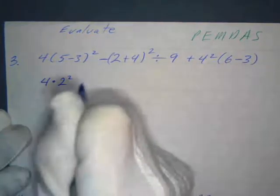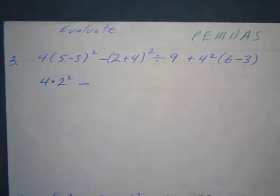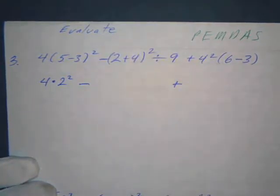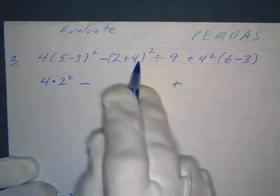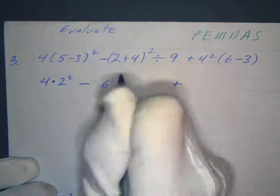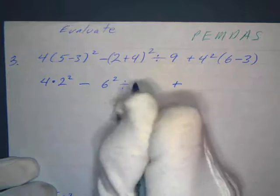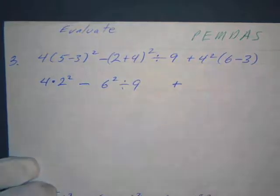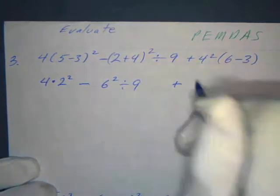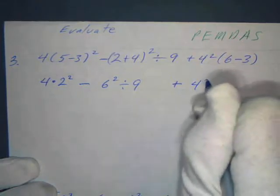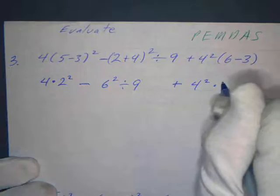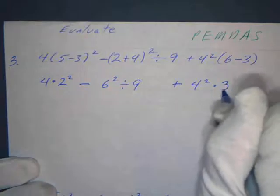I put a nice dot there to remind me. I've got a subtraction sign here and an addition sign way over here, so I'll just put those in so I don't forget. The next thing I'm going to do is this parentheses here, so two plus four is six, so this is going to be six squared divided by nine. And then over here I've got four squared and my parentheses is six minus three, which is three, so I'll just put a times three.